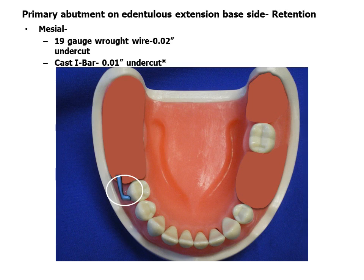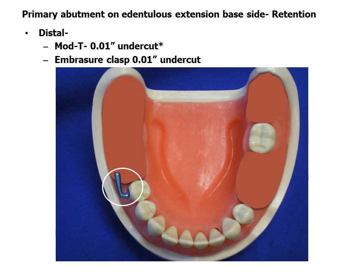Several clasping options are shown in the following slides. If the rest and retention are on the mesial, an eye bar retainer may be used with a .01 inch undercut. Wrought wire may also be used with a .02 inch undercut. If the rest is on the mesial and distal retention is desired, a modified T or embrasure clasp may be used. If using a distal rest, wrought wire to a mesial .02 undercut is the clasp of choice.